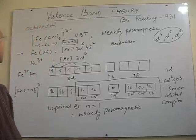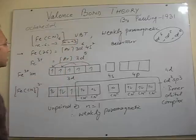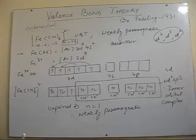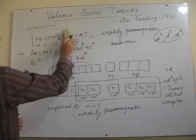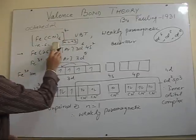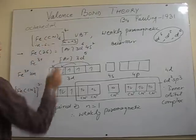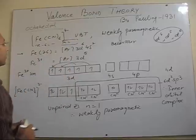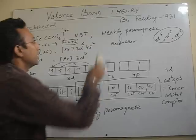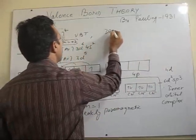Now let's take another example where I am just changing the oxidation state of the complex. Consider another complex ion [Fe(CN)₆] with a charge of 4 minus. In this case, the central metal ion is the same (iron) and the ligand is the same (cyanide), but the oxidation state of iron will change — it will be +2 in this case. This complex is experimentally found to be diamagnetic.